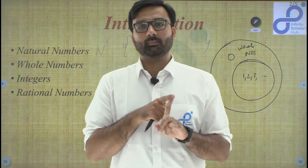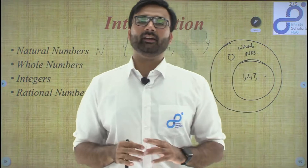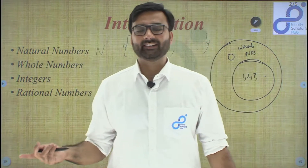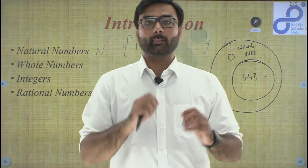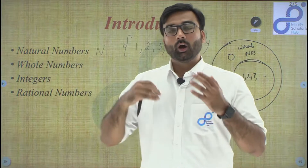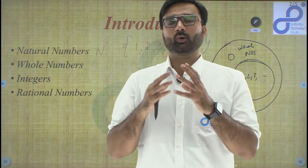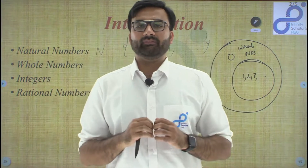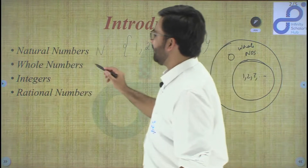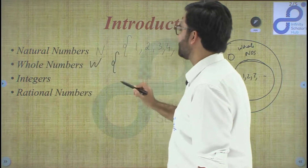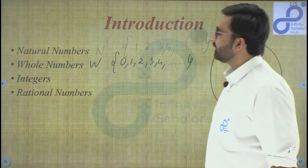Important points to remember: the smallest natural number is one, and the greatest natural number cannot be stated — it is infinite. Similarly, the smallest whole number is zero, and the greatest whole number cannot be stated. All natural numbers are whole numbers, but not all whole numbers are natural numbers, because zero is a whole number but not a natural number. We denote whole numbers with a capital W, containing 0, 1, 2, 3, 4 and so on.